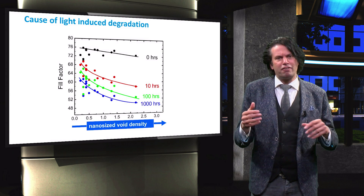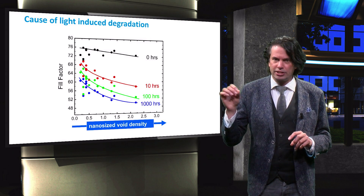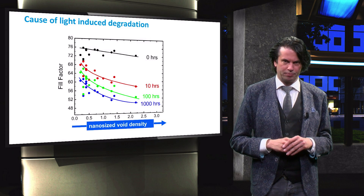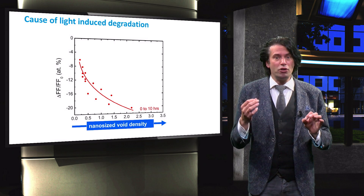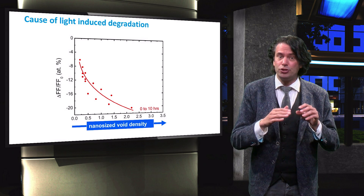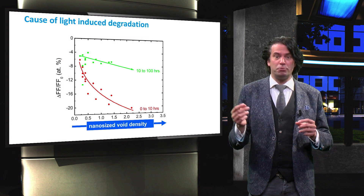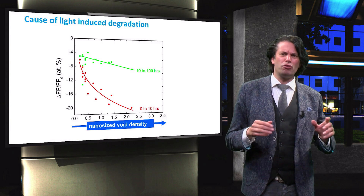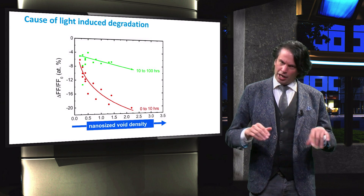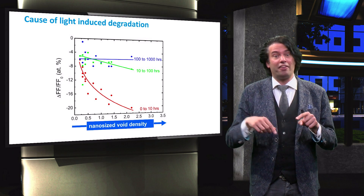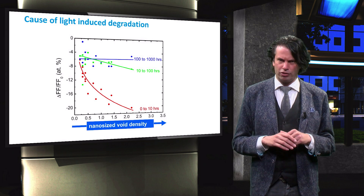We have earlier discussed that fast and slow light induced defects exist. The existence of the two types of time scales can be nicely demonstrated with this experiment. The relative decrease of the fill factor between 0 and 10 hours of light soaking shows that the creation of fast light induced defects heavily depends on the density of the nanosite voids. The relative decrease between 10 and 100 hours shows that the drop in fill factor hardly depends on nanosite void density anymore, and between 100 and 1000 hours it is not correlated at all.